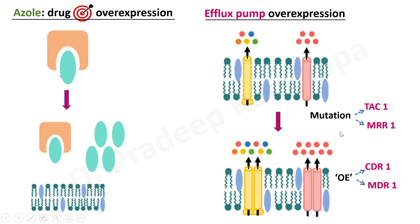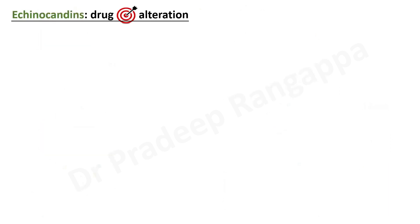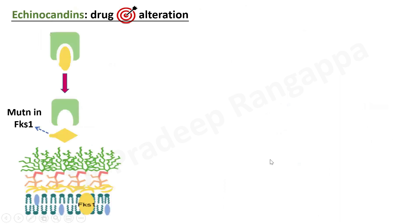So these are the three mechanisms for azole resistance: drug target overexpression, drug target alteration, and efflux pump overexpression. With polyenes, alternate sterols form and polyenes fail to bind, resulting in resistance. For echinocandin resistance, it is very similar to azole drug target alteration. There is a mutation in the FKS1 gene within the beta-1-glucan. This mutation in FKS1 changes the morphology, so the echinocandins — the green ones — fail to bind to the beta-1-glucan, and resistance to echinocandins develops.